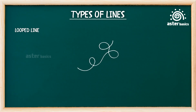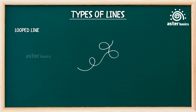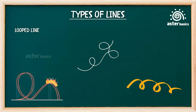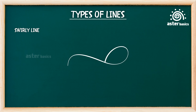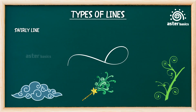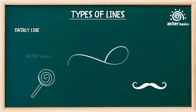Looped line: a line that forms loops, like linked circles or curly spaghetti. Looped lines are used to draw fancy borders, ribbons, or hair doodles. It's like a roller coaster going in loops or a ribbon twirling in the air. Looped lines love to spin and twirl like dancers. Swirly line: a loose, twisty line that curls around playfully. Swirly lines are used in drawing clouds, magic spells, or twirly vines. Swirly lines go round and round like a lollipop or a curly mustache — full of fun and imagination.